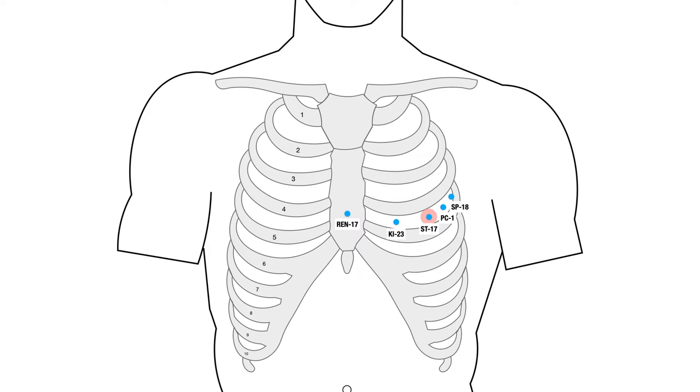And Spleen 18 is in the 4th intercostal space, 6 cun lateral to the midline, or 2 cun lateral to the nipple. And then just remember that the ribs kind of curve up, so sometimes these aren't all in a straight line. They kind of curve up with the shape of the ribs.